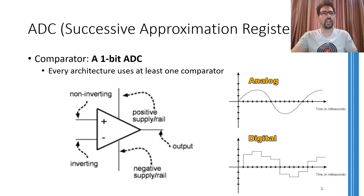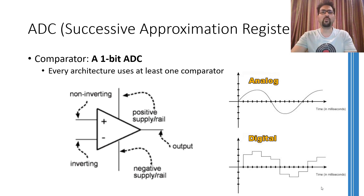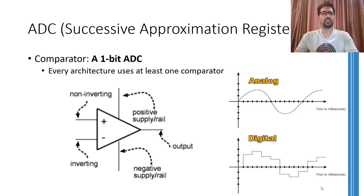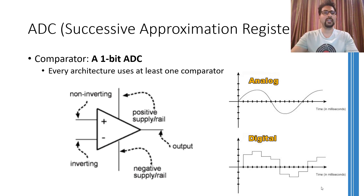No matter which kind of architecture the successive approximation register ADC is using, it will have at least one comparator. We will see that successive approximation ADCs are quite slower compared to other types of ADCs available, but still it is the most commonly used ADC because of the number of advantages it provides.